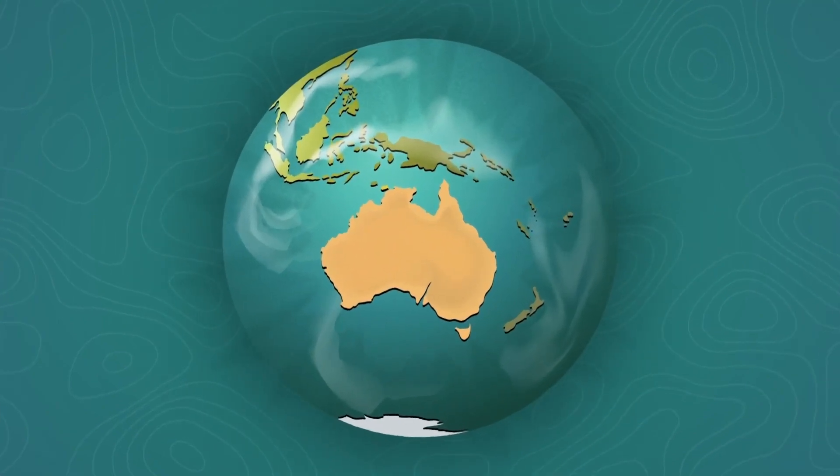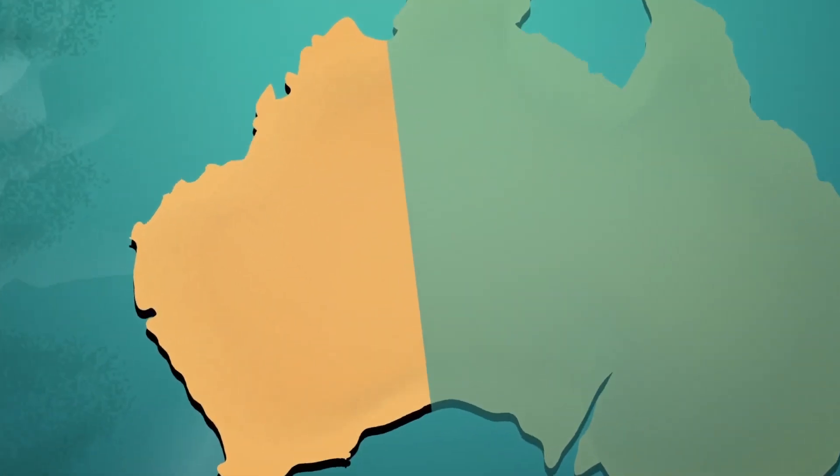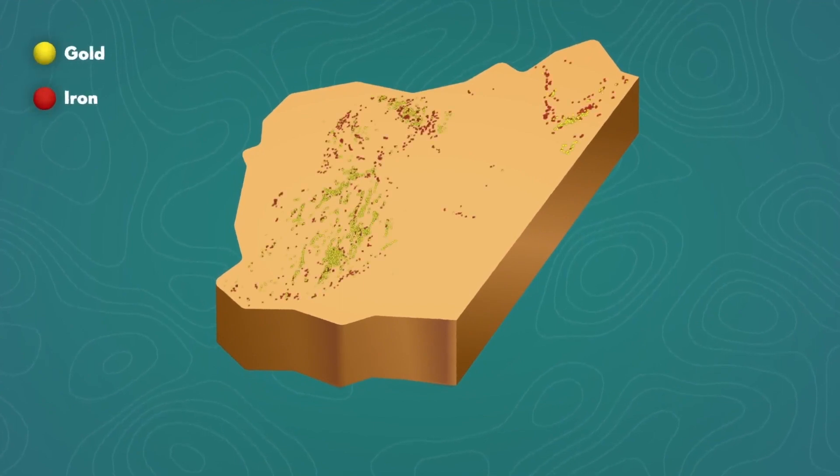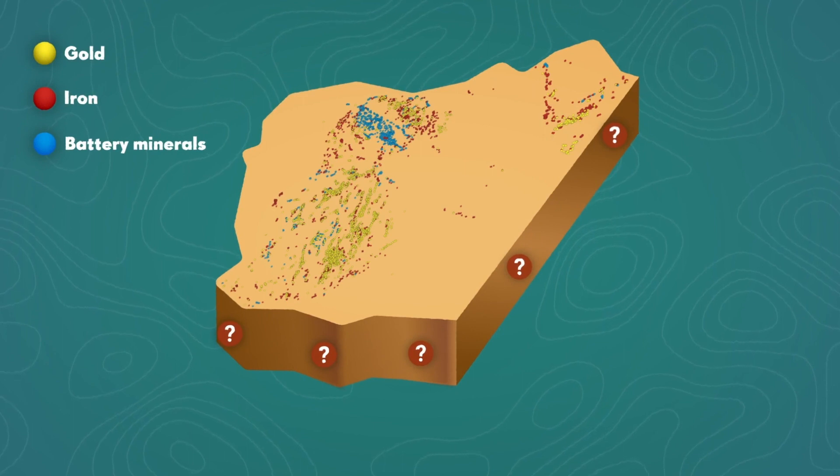Western Australia is one of the world's oldest land masses and richest resource locations with great future potential. Imaging the lithospheric mantle is key for targeted exploration and unlocking new resources.